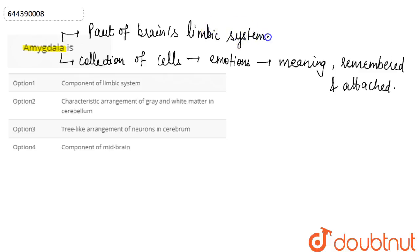It is basically a system that is involved with the regulation of sexual behavior, emotions, long-term memory. So we can say that amygdala, which basically is a collection of cells where the emotions are given meaning, remembered and attached to association responses to them. So for that, we can say that it's a part of the brain's limbic system.